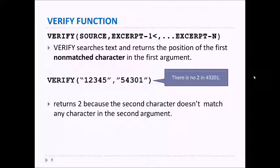The VERIFY function allows you to verify text, that there is certain text in a source that you're looking for. So for instance, VERIFY "12345" and then "54301". What it does is it returns a two because the character two in the list of possibilities, the one, two, three, four, five, doesn't match any character in the second argument. So two is the first unmatching character. And so the value returned is two.